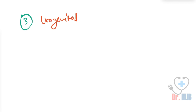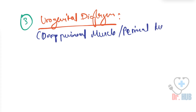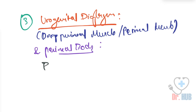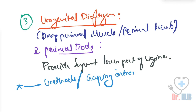For the second question, Level 3 includes the urogenital diaphragm, the deep perineal muscle, the perineal membrane, and the perineal body. It provides support to the lower part of the vagina. The consequences of damage include urethrocele, gaping of the introitus, and deficient perineum.